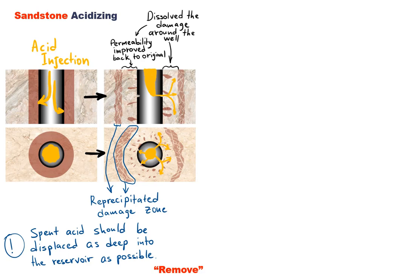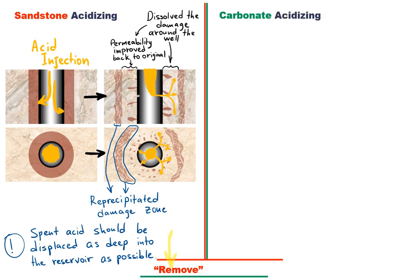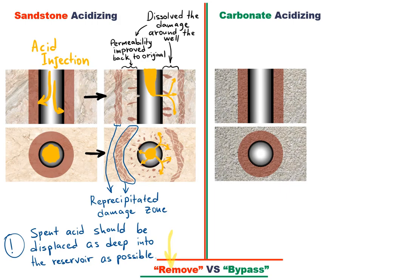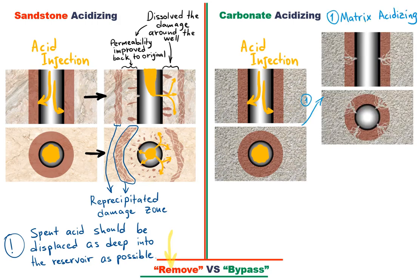So, to summarize, in acidizing stimulation of sandstone reservoirs, our objective is to dissolve or remove the damaging material from the near wellbore region. Next, let's discuss the same damage but in a carbonate reservoir. In this case, our goal is to create a conductive pathway for the flow of hydrocarbons. Here, we are not trying to dissolve all the damaging material like we did with the sandstone reservoir. Instead, we are bypassing this damaged region by creating so-called wormholes.